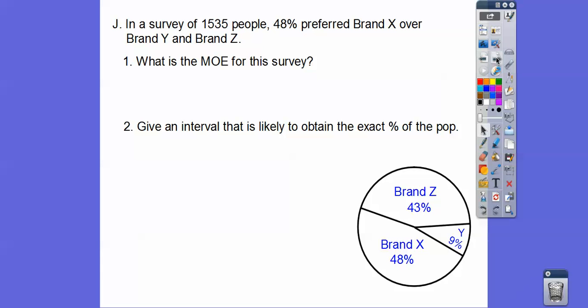Let's try this. In a survey of 1,535 people, 48% preferred brand X over brand Y and brand Z. Here's a little pie chart that represents that. What's the margin of error for this survey? We're going to do the margin of error equals 1 over the square root of N. Here we go, 1 over the square root of N, which is 1 over, plus or minus, don't forget, 1 over the square root of 1535, which gives us, square root of 1535 is 39.18. And 1 divided by 39.18 gets us 0.026. So our margin of error is plus or minus 0.026.